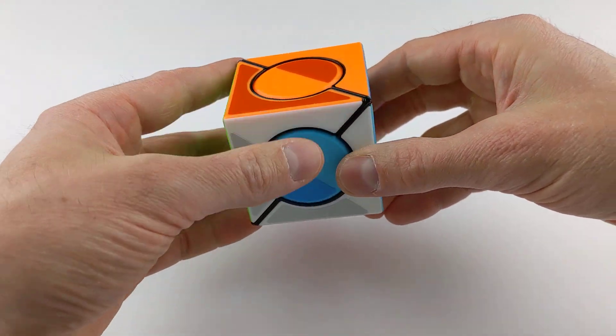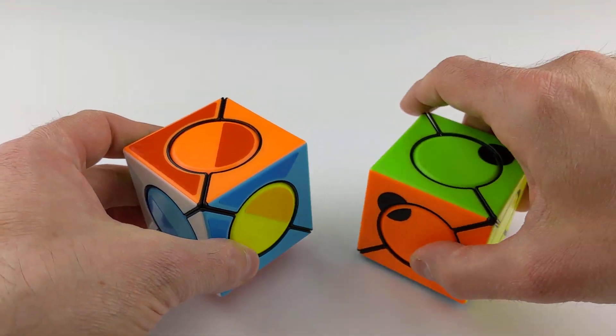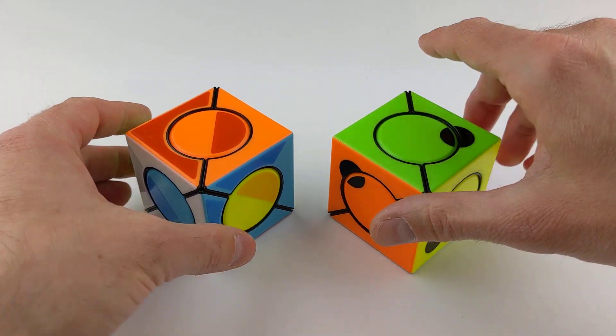That's the super six-spot cube. Which version do you like best? Thanks for watching.